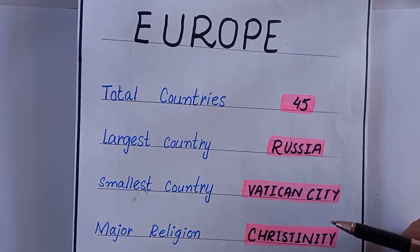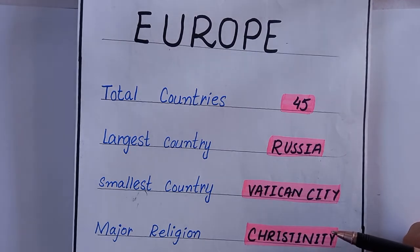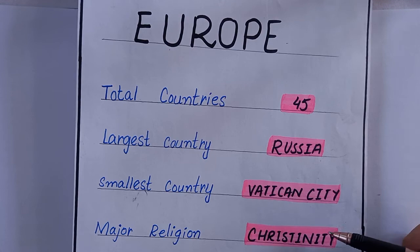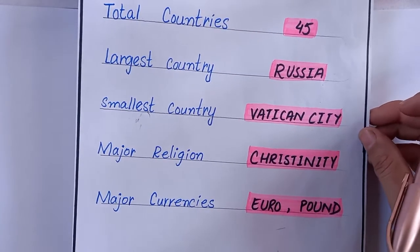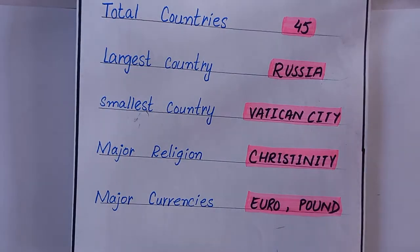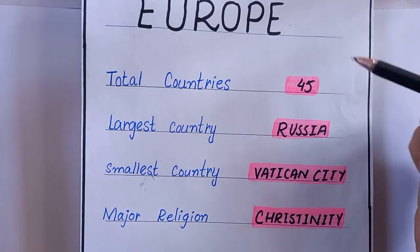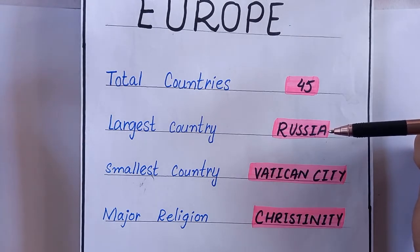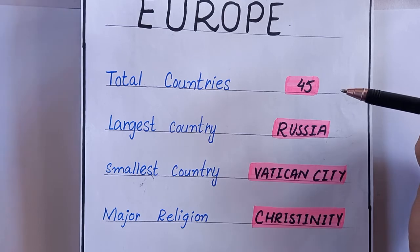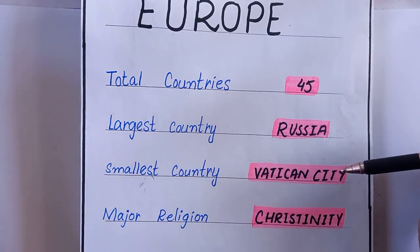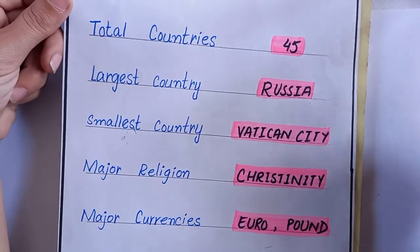Vatican City is not only the smallest country of continent Europe but also the smallest country of the world. The major religion of continent Europe is Christianity. The major currencies of Europe are Euro and Pound. To repeat: continent Europe has a total of 45 countries, Russia is the largest one, its capital Moscow is also the largest populated city of continent Europe, Vatican City is the smallest, the major religion is Christianity, and the major currencies are Euro and Pound.